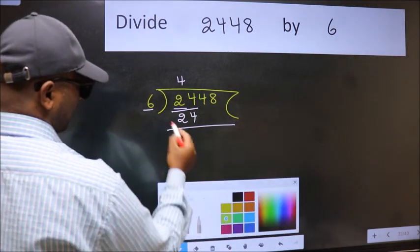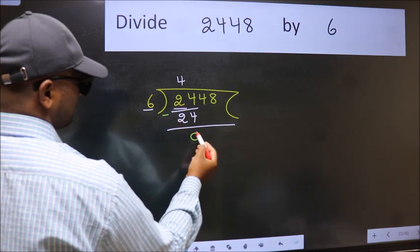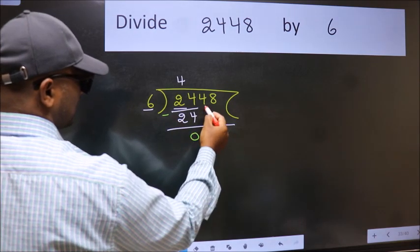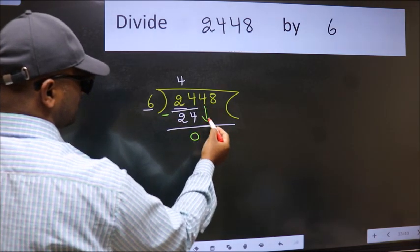Now we should subtract. We get 0. After this, bring down the beside number, so 4 down.